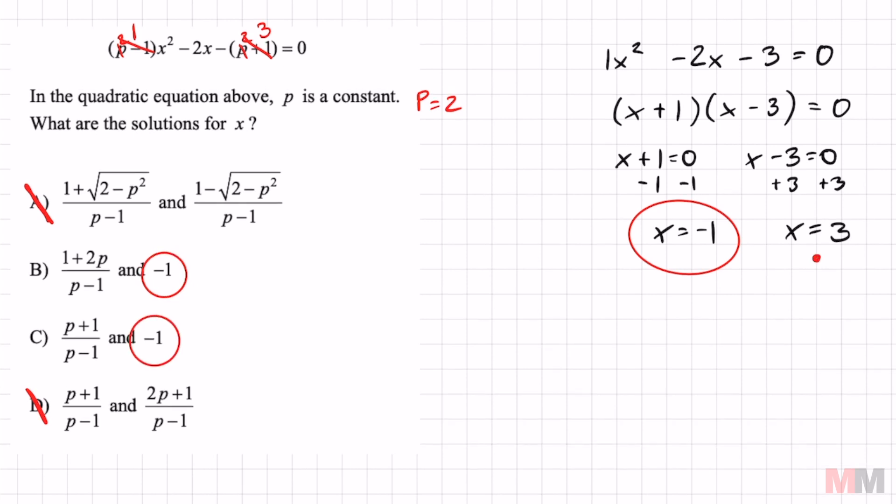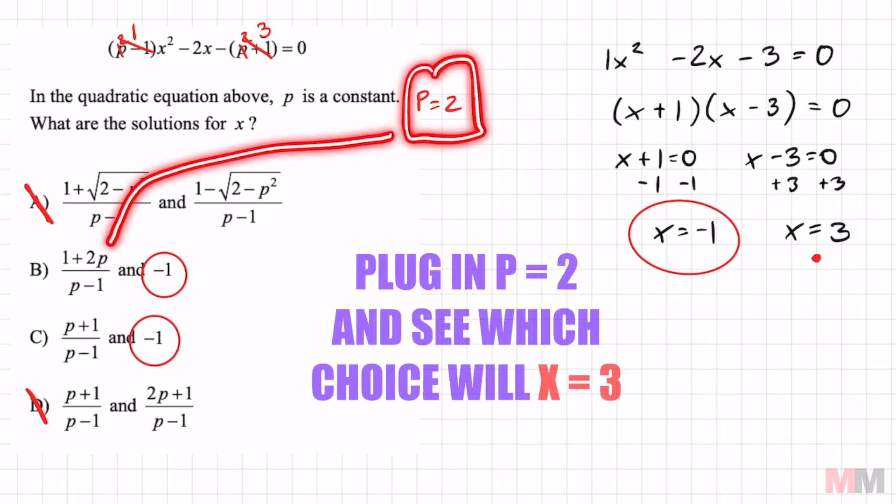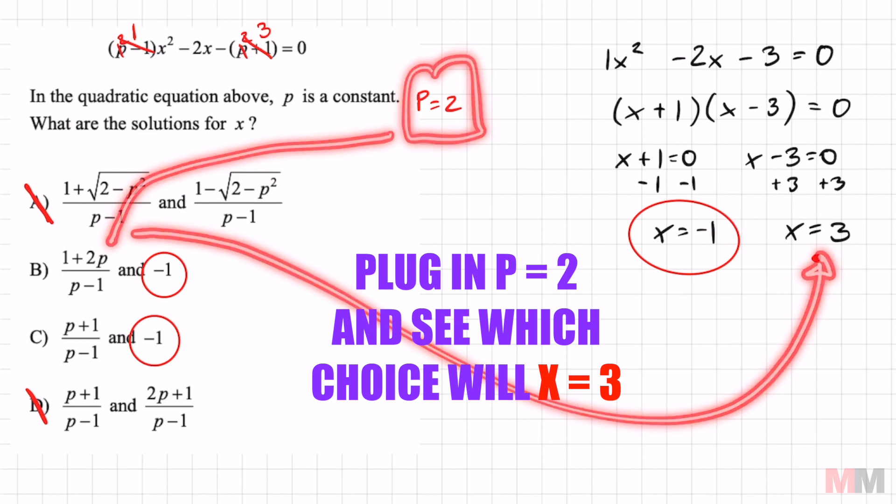And to see if this is your answer, we chose p as two. So we got to substitute p as two in one of the answer choices. And if it equals three, then that is the correct choice.